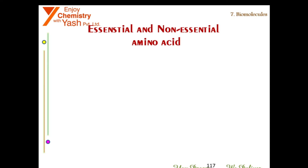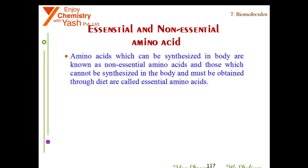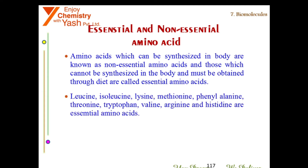Amino acids which can be synthesized in the body are known as non-essential amino acids, while those which cannot be synthesized in the body and must be obtained through diet are called essential amino acids. The essential amino acids are: leucine, isoleucine, lysine, methionine, phenylalanine, threonine, tryptophan, valine, arginine, and histidine.